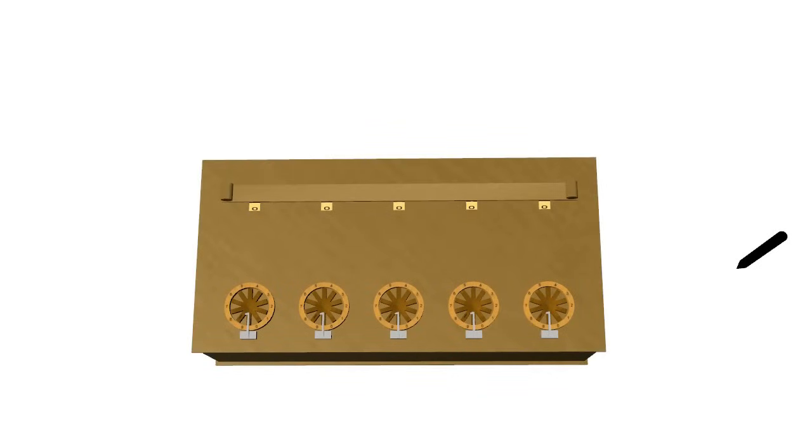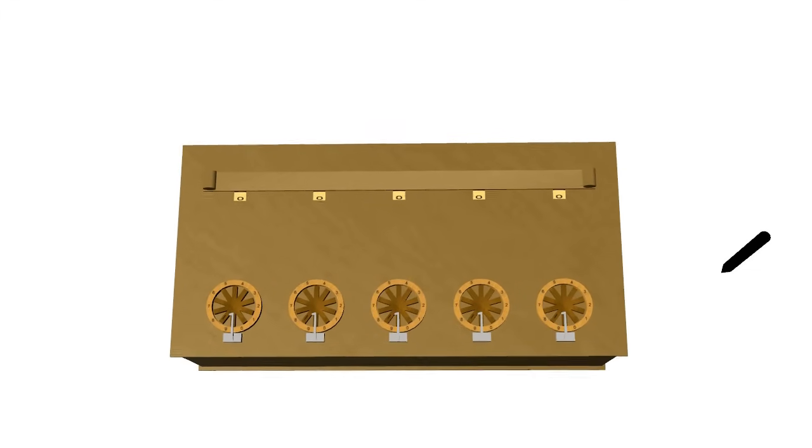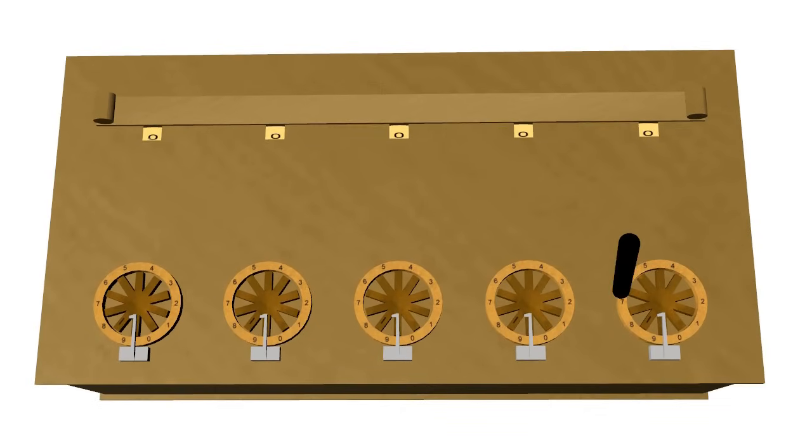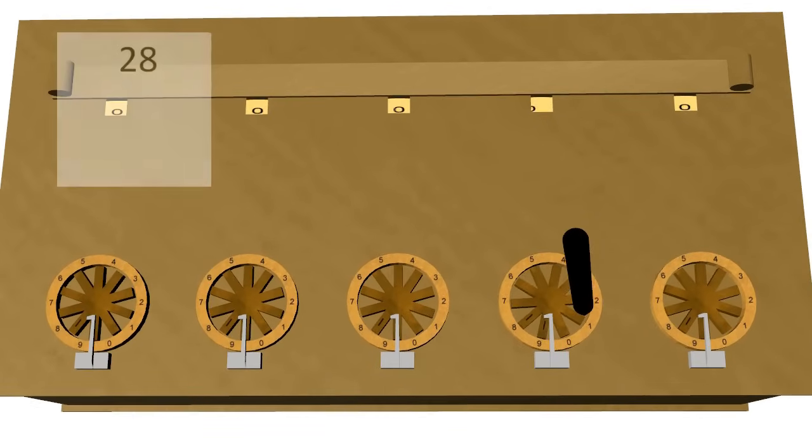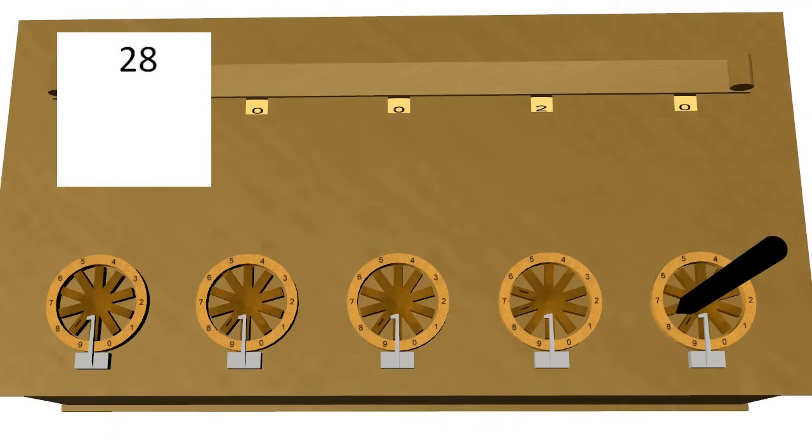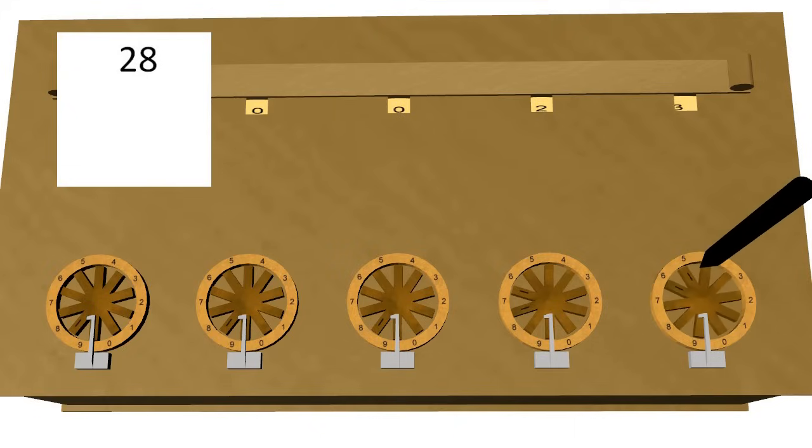On the top of the calculator is a series of input dials and output windows. Each input dial is divided into ten parts by a set of spokes. A digit is entered into the machine by placing a stylus between the appropriate spokes and rotating the wheel clockwise until a metal stop is reached. Entering several numbers consecutively causes their sum to be displayed in the output windows.